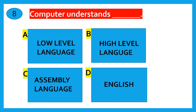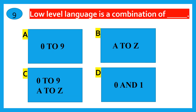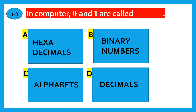Which language does a computer understand? Options: Low-level language, High-level language, Assembly language. The correct answer is Low-level language. Low-level language is a combination of 0 and 1. In a computer, 0 and 1 are called Binary numbers.